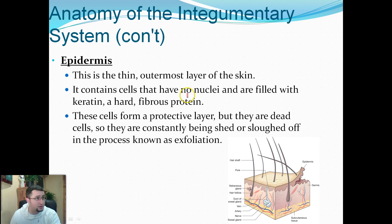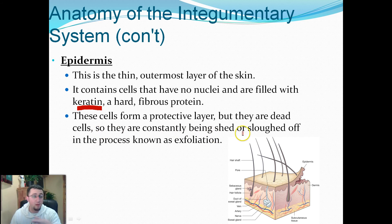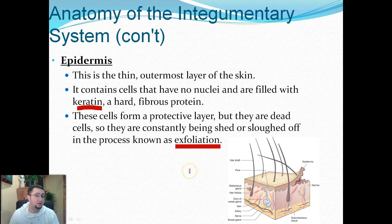The epidermis contains cells that have no nucleuses and are filled with a protein called keratin, which is hard and fibrous, making your skin kind of hard. These cells form a protective layer, but most of them are actually dead. They are constantly being shed — a process known as exfoliation. Interestingly, if you dust your house, you are dusting about 80% dead skin cells from your family members. Dust is mostly old dead skin that fell off.